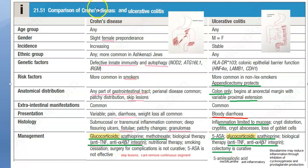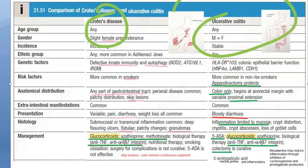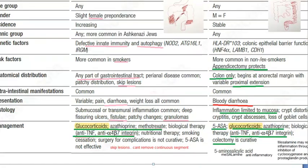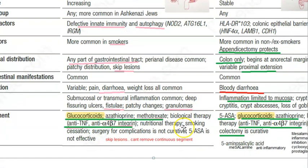Let us look at the differences in the treatment of Crohn's and ulcerative colitis — basically how you do the treatment for these conditions. So look at the last point here: management. Let us first look at management of Crohn's.